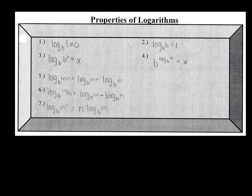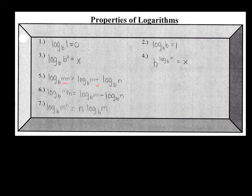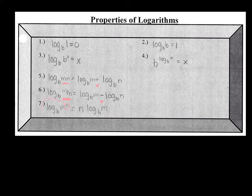Property five: log base B of M times N — when you're multiplying and want to expand, you're going to add. Or vice versa: if you have two log terms being added and you go to condense them, you make them a product. When we have a product we add, and when we have a quotient we subtract. Property seven: log base B of M to the N power — that power of N goes out to the front of your log expression, so it becomes N times log base B of M.